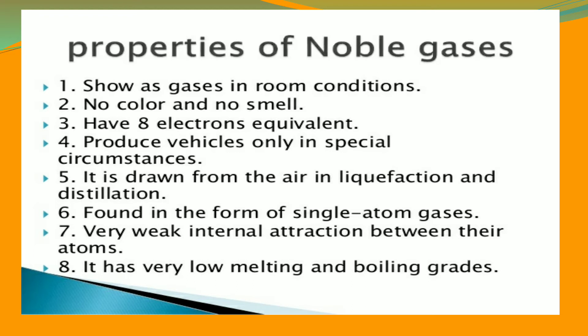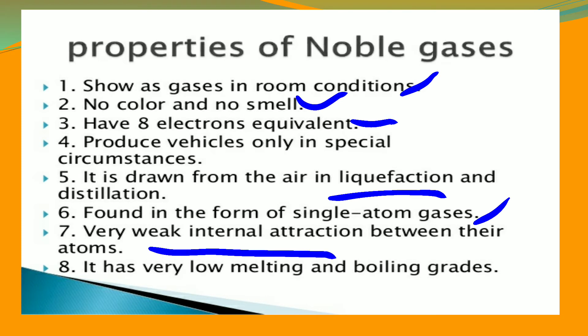Let us learn their properties. Noble gases exist as gases at room temperature. They do not have any color or smell. They have 8 electrons in their outermost shell, which is completely filled. They are obtained from air by liquefaction and distillation. They are found in the form of single-atom gases and have very weak inter-atomic attraction. They have very low melting and boiling points.